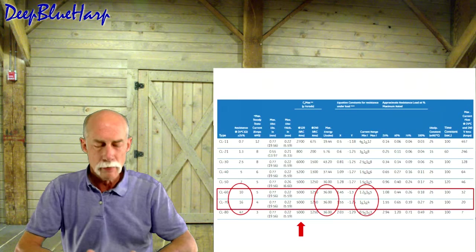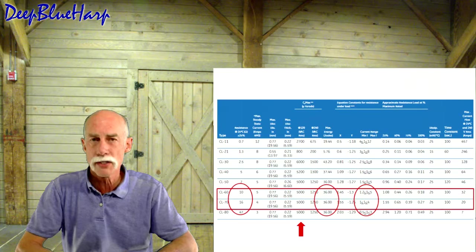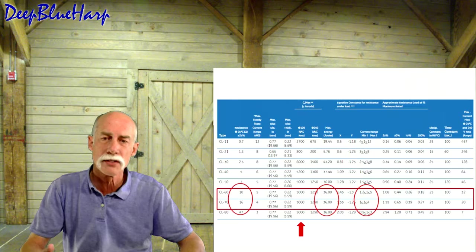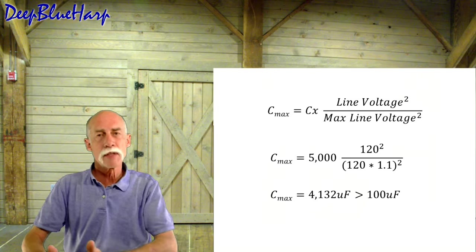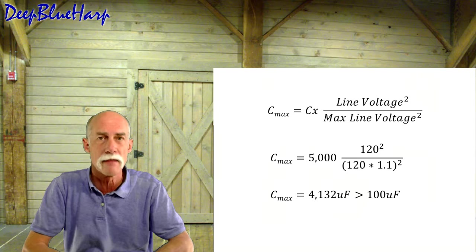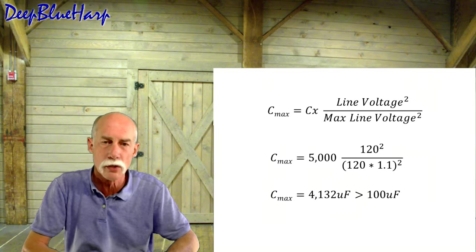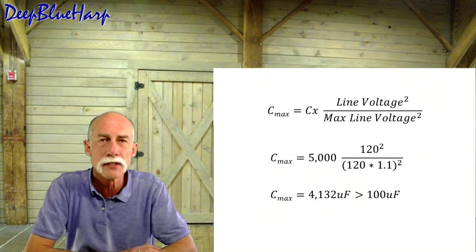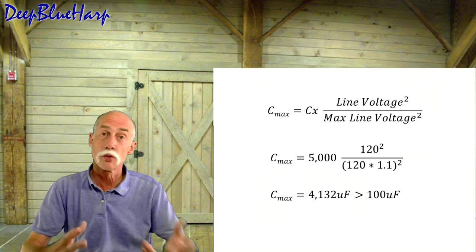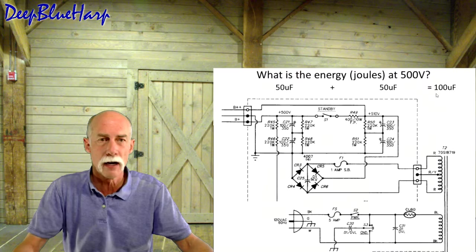There's another calculation we need to go through. We need to check the maximum capacitive load on the thermistor to run safely. The capacitive value maximum for CL60 or even the 70 is 5,000 microfarads. So the maximum capacitive load is equal to the design capacitance of the thermistor, which is 5,000 microfarads, times the square of the line voltage divided by the max line voltage squared. Or in this case, it's 4,100 microfarads, and we have a 100 microfarad load. Fine. We're great. If it was switched, we'd have a problem. But it's well within design safety operations specifications.